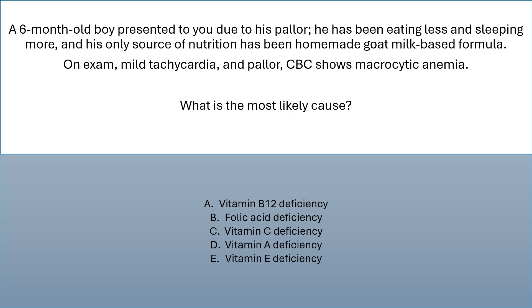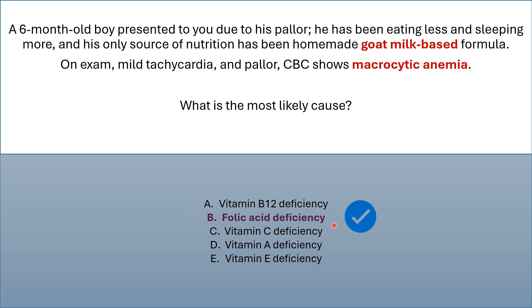Case: A 6-month-old boy presents with pallor, eating less, and sleeping more. His only source of nutrition has been homemade goat milk-based formula. On examination: mild tachycardia and pallor. CBC shows macrocytic anemia. The correct answer is folic acid deficiency. The key words here are goat milk-based formula as the only source of nutrition and macrocytic anemia — this is a classic presentation of folic acid deficiency.